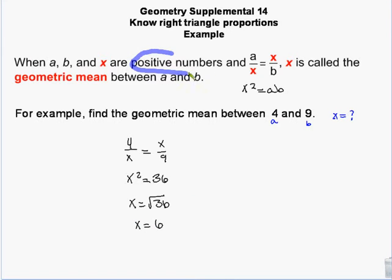Now we're talking about positive numbers — we're not looking for the square roots that are negative. We only want the positive, which is the principal square root. Don't worry about that plus-or-minus thing or saying 6 and negative 6; you just want the positive one in this context.